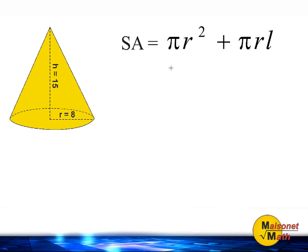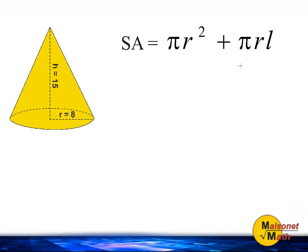To find the surface area of this cone, we are going to use the formula pi times radius to the second power, plus pi times radius times the slant height.